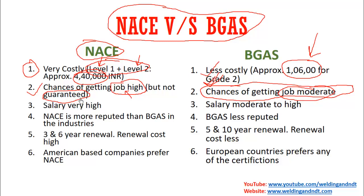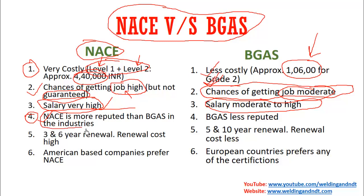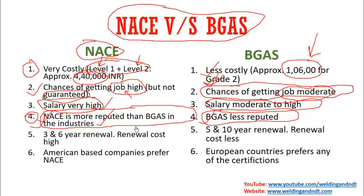Comparing salary: a NACE certified person gets a very high salary, whereas a BGAS certified person gets a moderate to high salary. So NACE wins on salary. Also, in industry, NACE is more reputed than BGAS — this is a truth. NACE certified persons are seen with good reputation because NACE is considered a practical certification course with more practical work involved, and that is why industries give it good reputation.